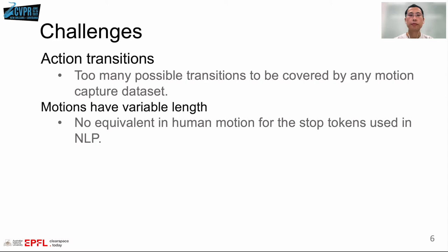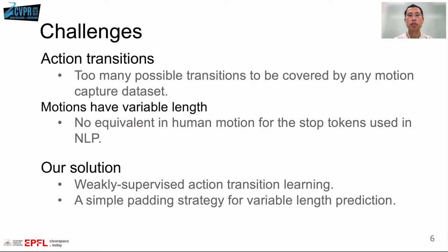So in this work, we propose two simple strategies to tackle these challenges. We first introduce weakly supervised action transition learning, which enables our model to be trained with datasets of single action motions. And we also propose a simple padding strategy for variable length prediction.